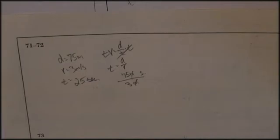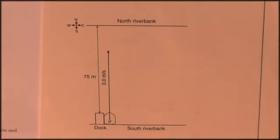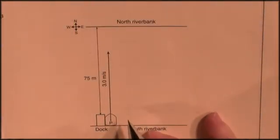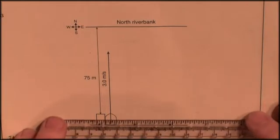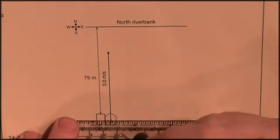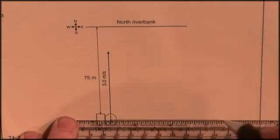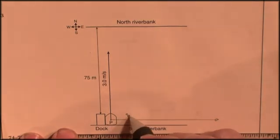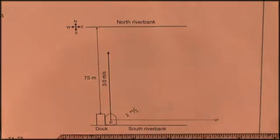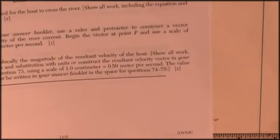I'm getting two points for that. Question 73: on the diagram in your answer booklet, use a ruler and protractor to construct a vector representing the velocity of the river. We were told earlier the velocity of the river is due east, drawn going eastward at two meters per second.